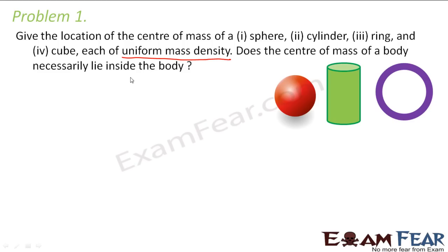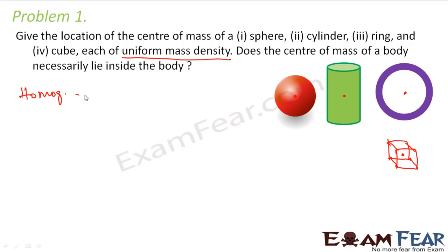What do you mean by uniform mass density? That means the mass is spread uniformly throughout the object, so we are talking about homogeneous bodies. Now we know that for homogeneous bodies the center of mass will lie at their geometric center. So for this sphere, this will be the center of mass. For this cylinder, again the geometrical center. Similarly for this ring, the geometrical center. And for a cube, the center of mass will be concentrated at that point. So the first part is done.